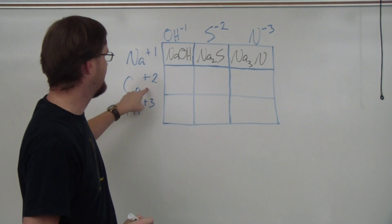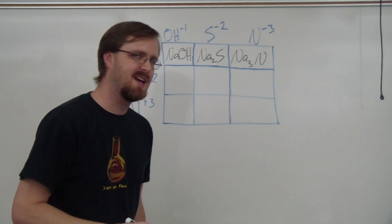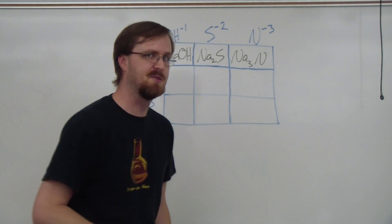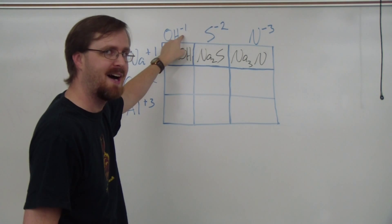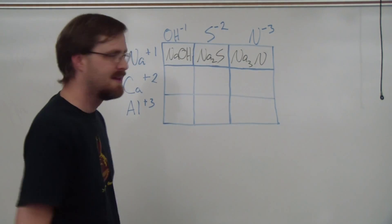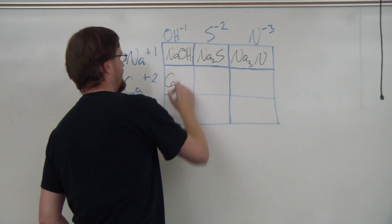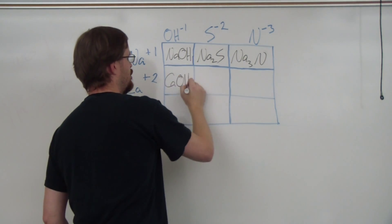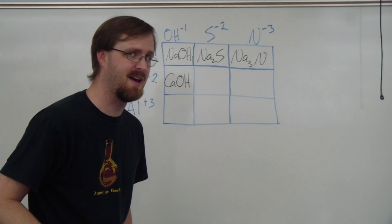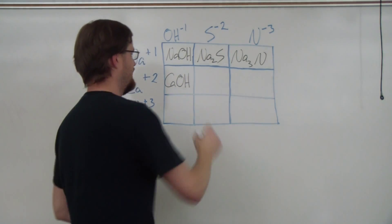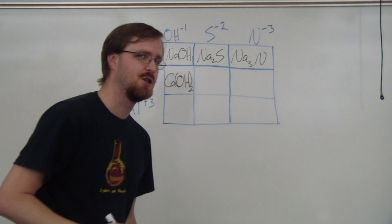Next category: we have calcium plus two and hydroxide negative one. So once again our lowest common multiple is two. This time we need two of the hydroxides in order to balance out the calcium. But wait a minute — this is a polyatomic ion, and polyatomics need to be kept together. So we put a parenthesis and two.